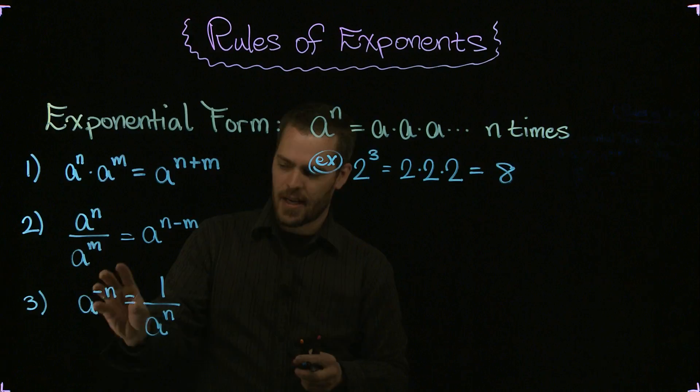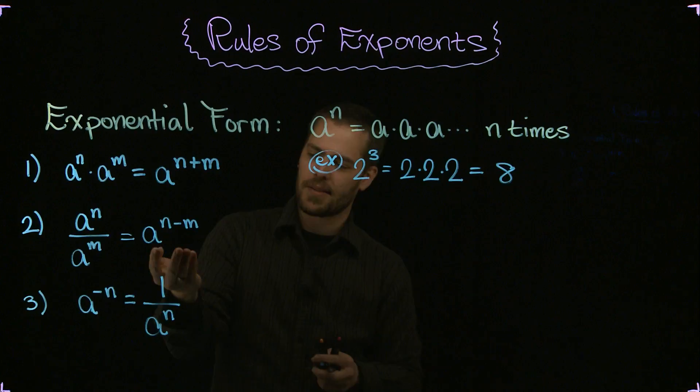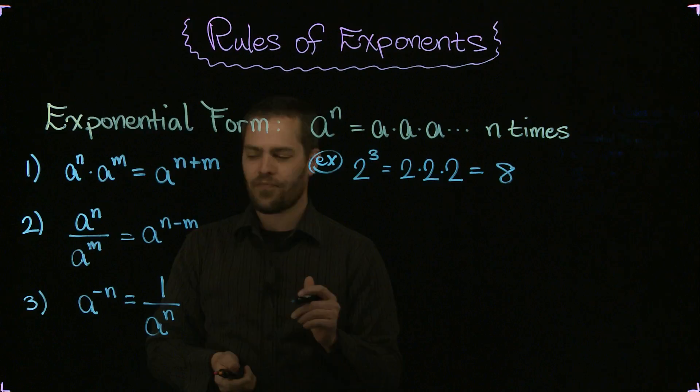That one's an interesting one to remember in particular because that negative here is just telling you that you're looking at a fraction. It's not telling you that this number is negative. It's just saying, hey, here's a fraction. It's the same as this over here. Saves a little space to write it as a to the negative n power. And you'll come across negative exponents as you're working some of these other expressions. So it's nice to know what that means as a fraction.